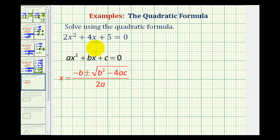So we first need to recognize that a is equal to 2, b is equal to 4, and c is equal to 5. So using these values, we'll perform substitution into the quadratic formula.